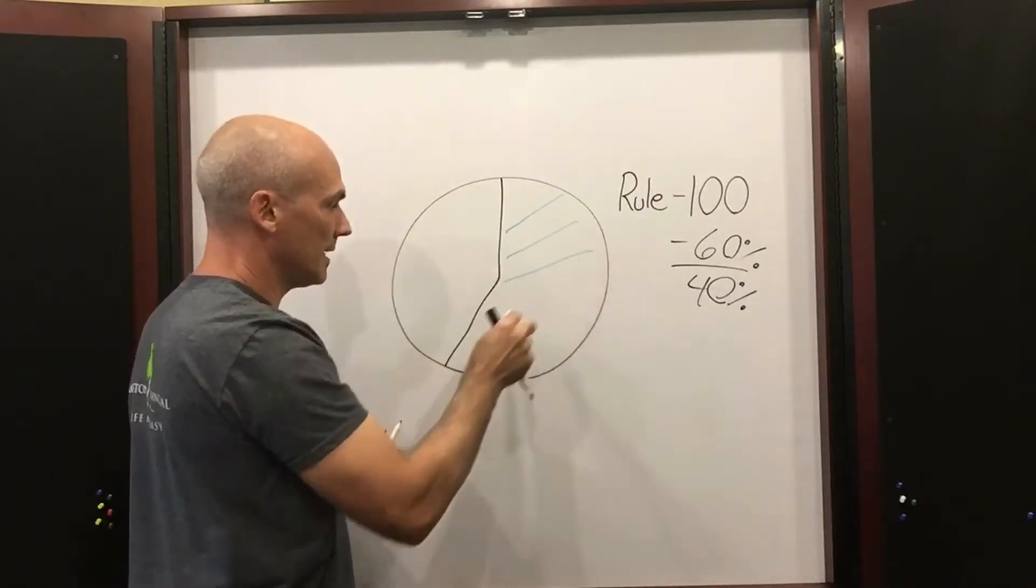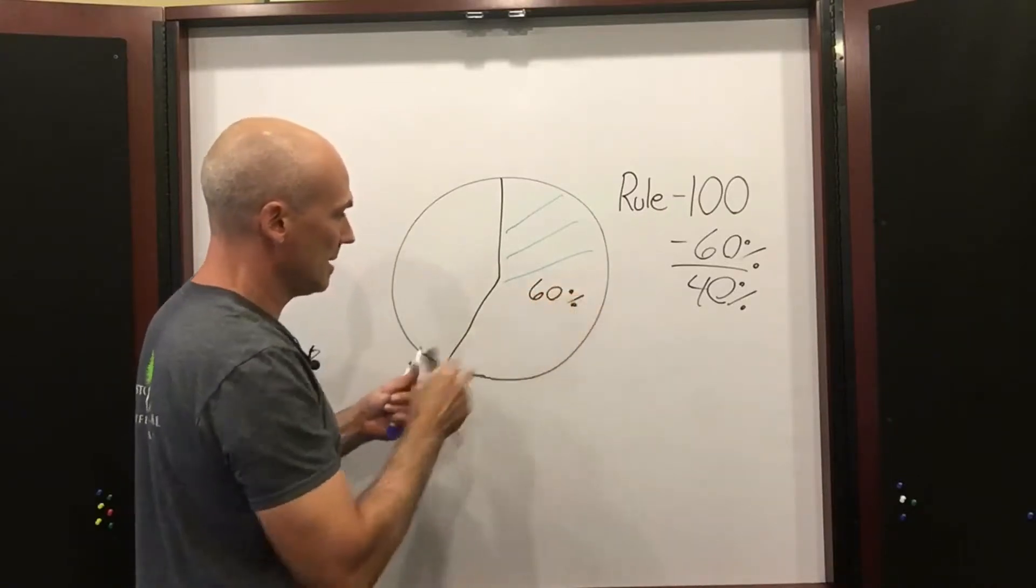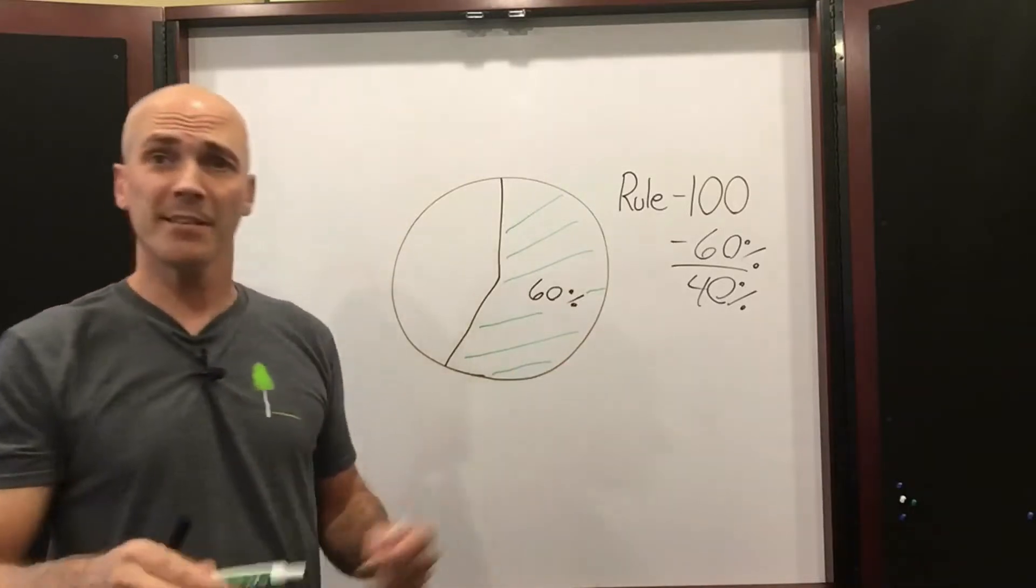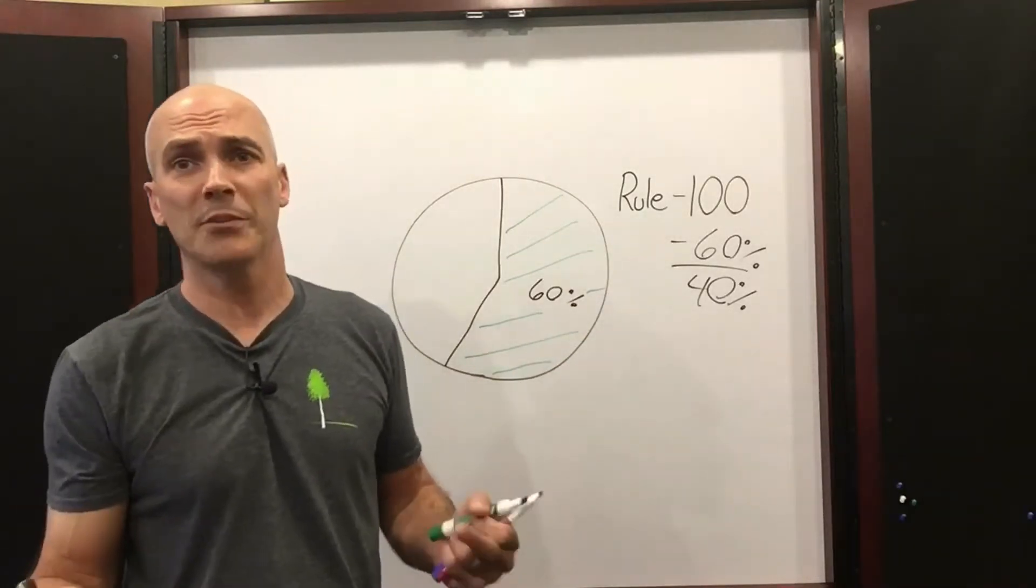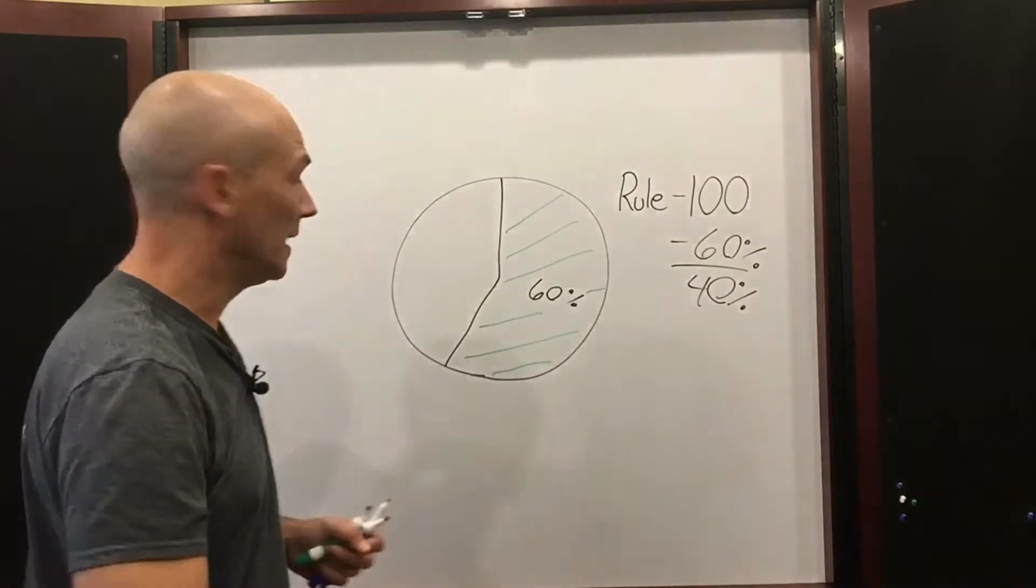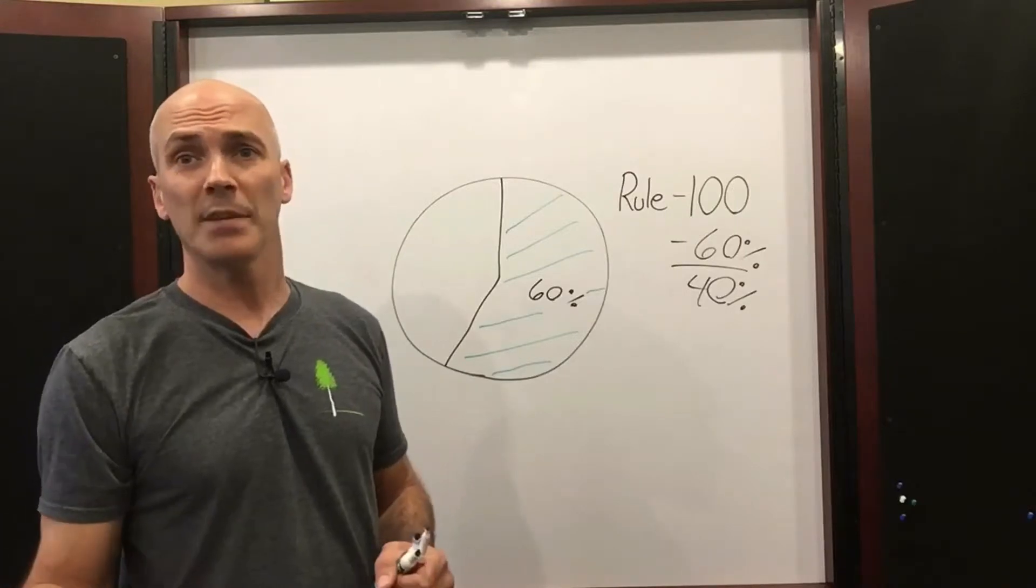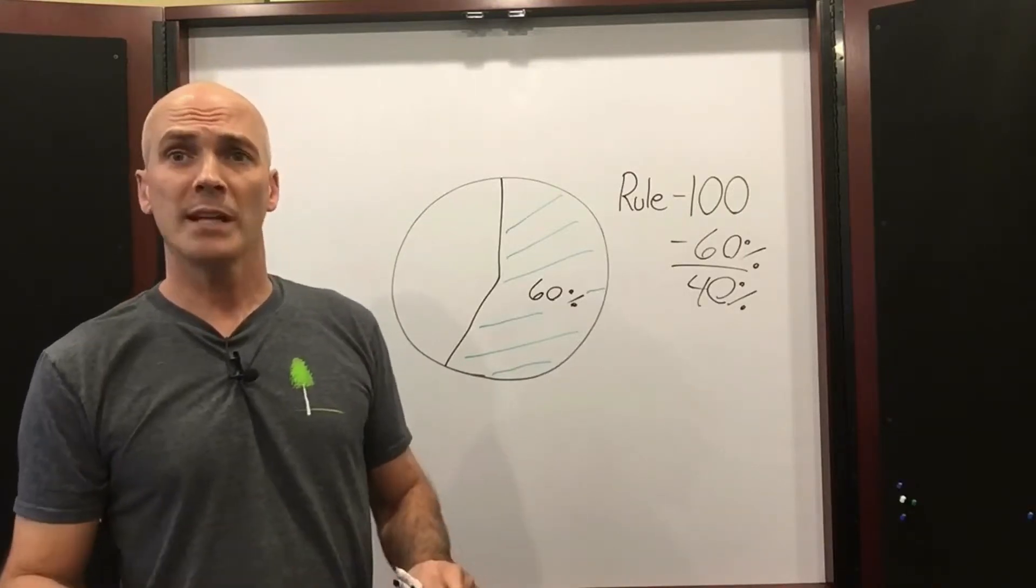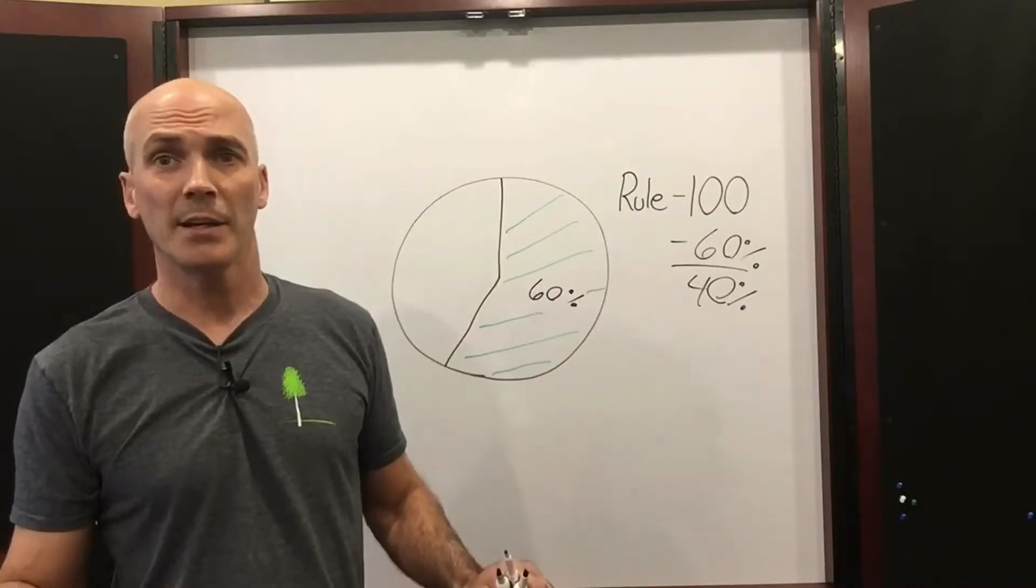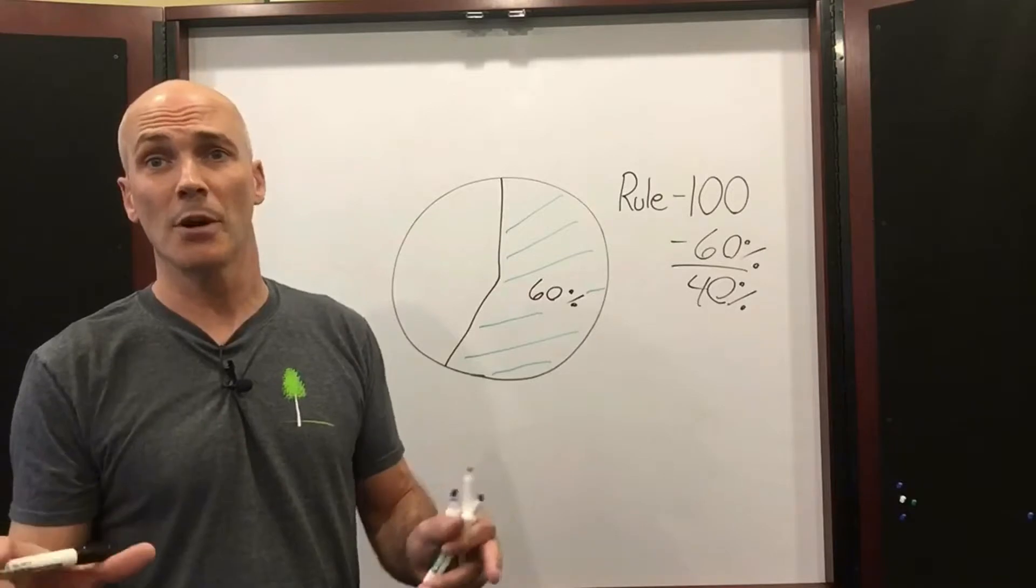So the older you get, the more conservative you gradually become according to Rule 100. And the reason for that is because you don't have as much time to make up for those losses as you near retirement. The worst thing that happened to individuals that retired in 07, 06, is a market downturn at the beginning of their retirement. That's kind of worst case scenario.